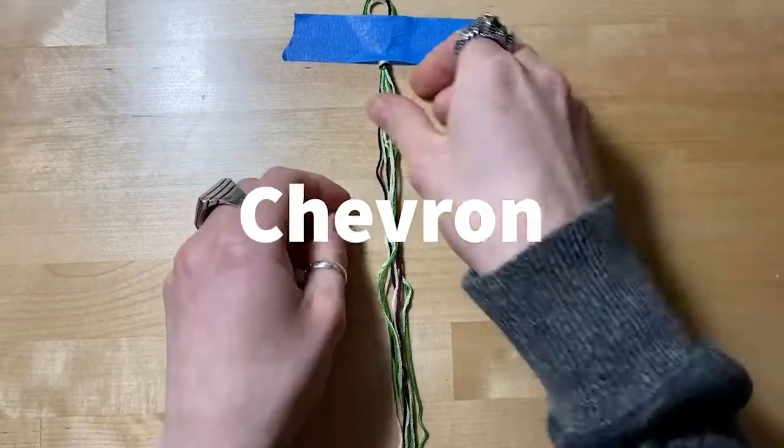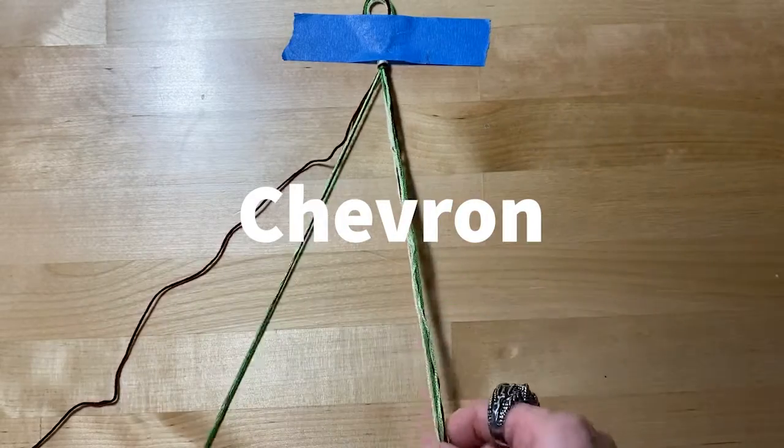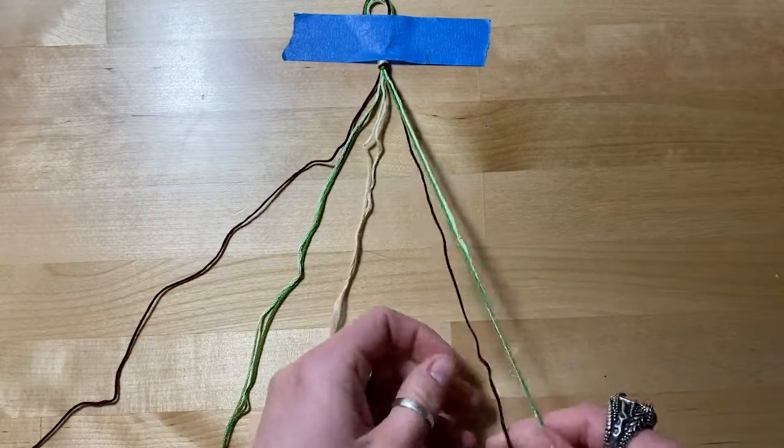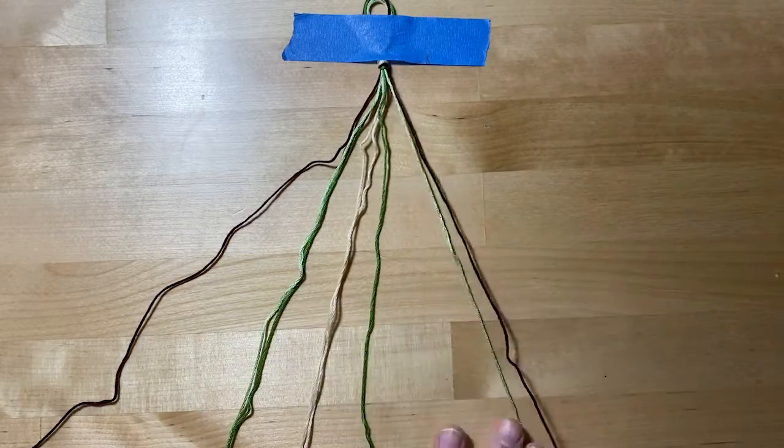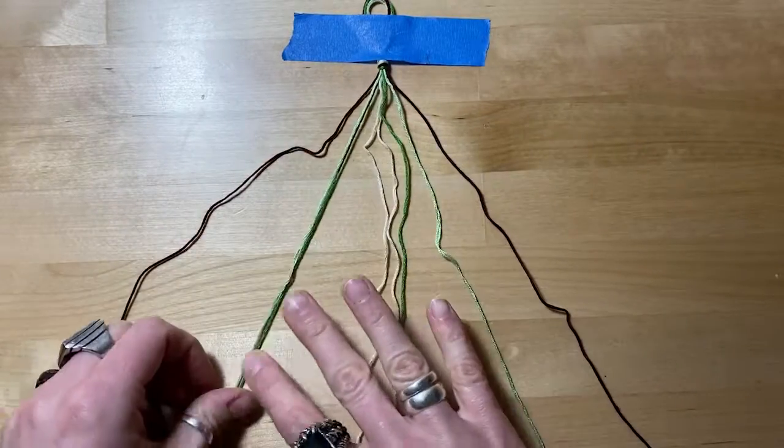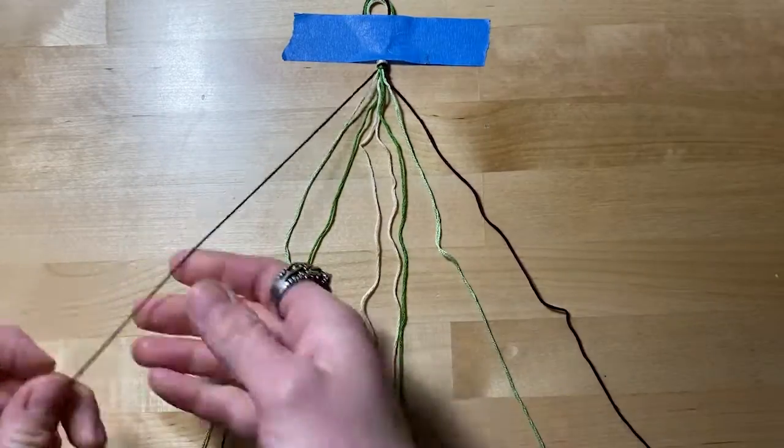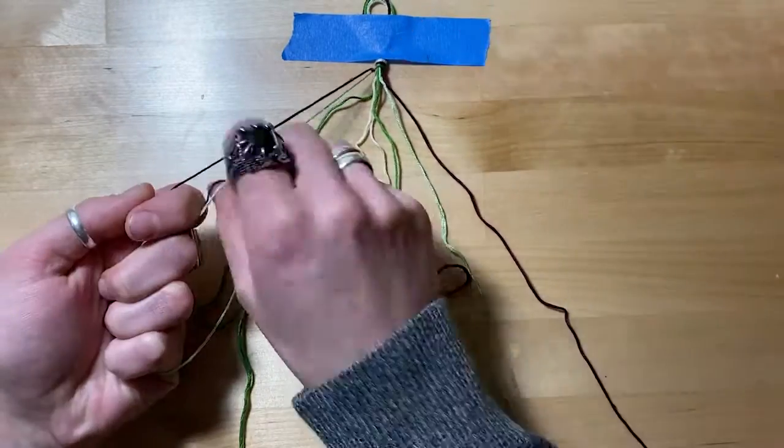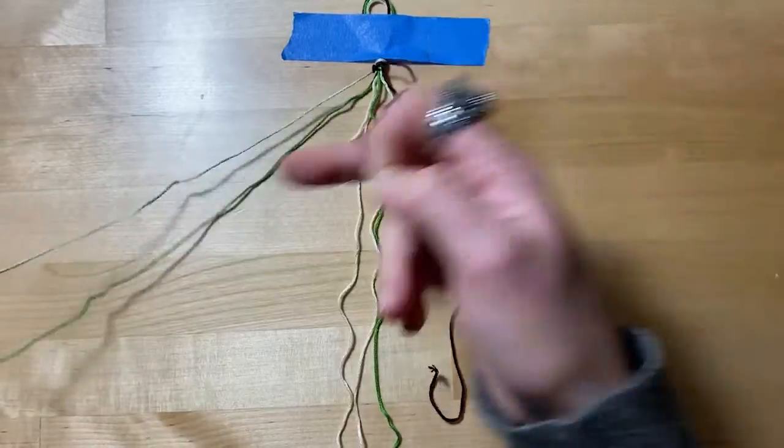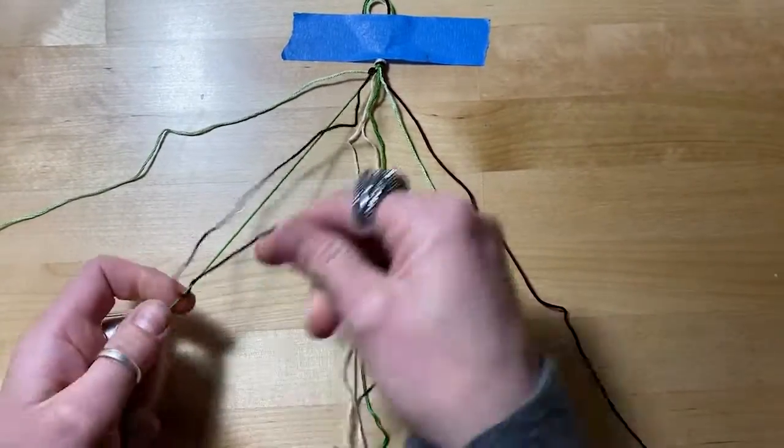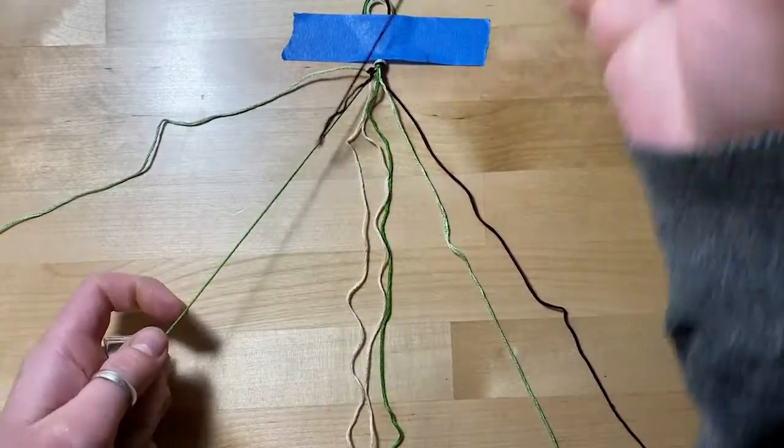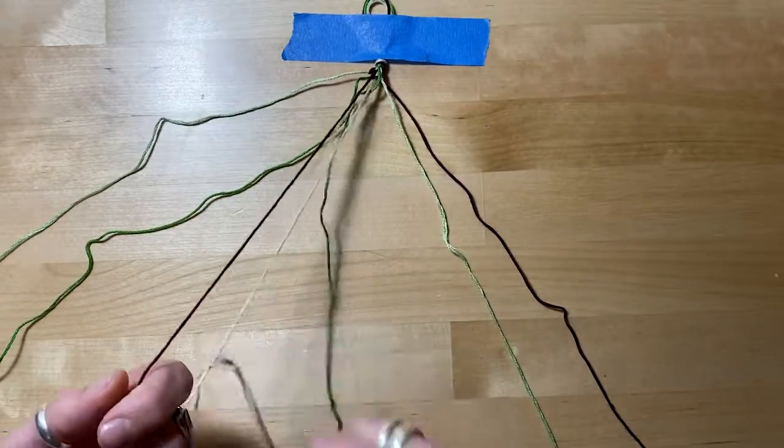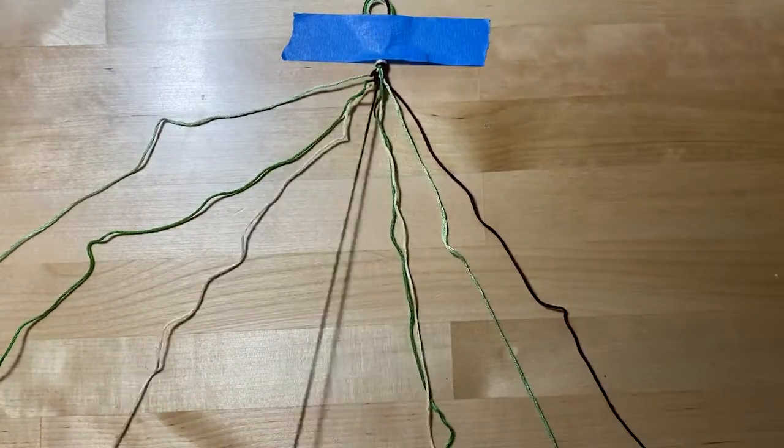The chevron starts out the same way. I've already cut my strands and taped them down. For this one, you have to arrange your colors in pairs opposite ways. So on the far outside I have two maroons, then two mint greens, two dark greens, and two white in the middle. We're going to go halfway across, so the maroon on the left is going across the light green, the dark green, and the white, and it's going to hang out in the middle and wait for the other maroon to meet it there.